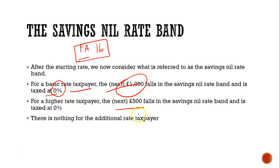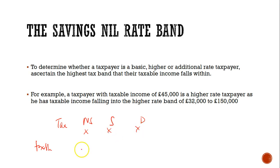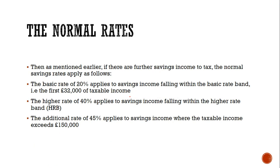This thousand pound nil rate band is for the basic rate taxpayer. The higher rate taxpayer will only enjoy five hundred pounds. Now, to determine whether someone is a basic rate or higher rate taxpayer, you look at their taxable income. Remember, taxable income is a total made up of non-savings, savings, and dividends if you have any. You take your incomes, deduct your personal allowance, and whatever you have across those categories makes up your taxable income.